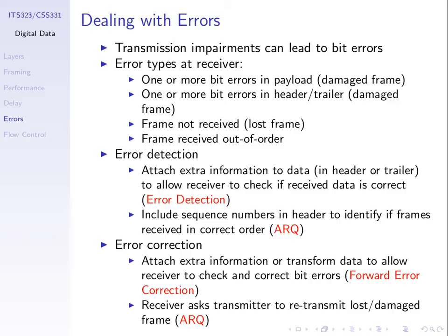We'll see sequence numbers come up in a technique called ARQ. Another type of error is receiving frames out of order — I transmit frames one, two and three but receive them as one, three and two. If those frames carry a file split into three parts, reassembling them in the wrong order makes the file useless. Sequence numbers help here too: if I receive frame one, three, two, I can realize I need to swap three and two back into order.